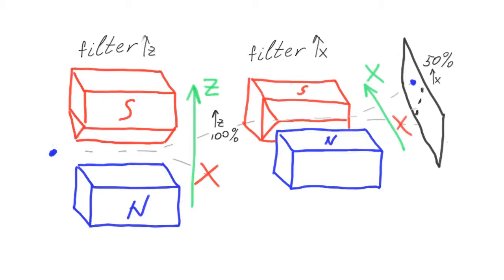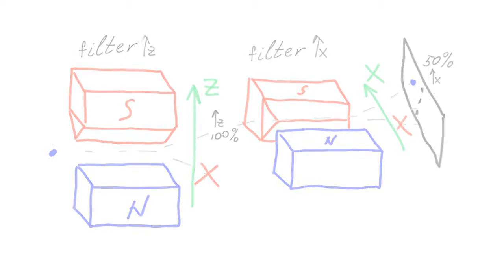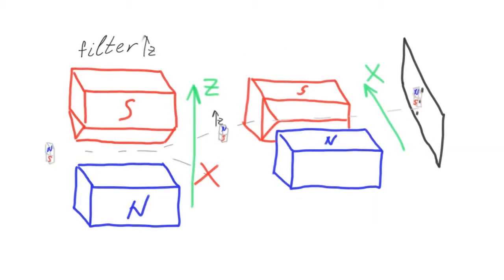This example also shows that it's impossible to visualize spin as a classical vector. After all, it's not determined before the measurement — it only has probabilities of pointing in one direction or another. Spin is the simplest example of a more general fact that quantum mechanical objects and their characteristics cannot be visualized or imagined. Notice that a macroscopic magnet contains a lot of electrons: half are pulled to the right and half to the left. As a result, it does not deviate and hits the center of the screen, consistent with classical physics. So classical physics comes from quantum mechanics by averaging over a large number of particles.